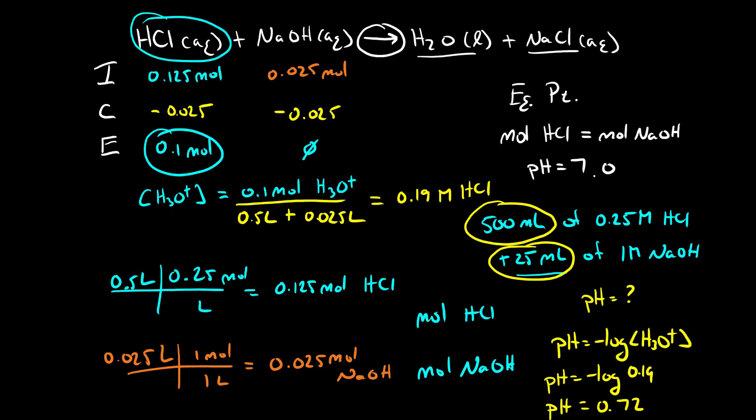We've added a good amount of sodium hydroxide but we still have a solution that's really acidic and that's because in this solution we still have a lot of strong acid so the pH is still really acidic.